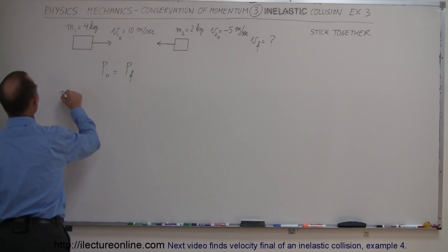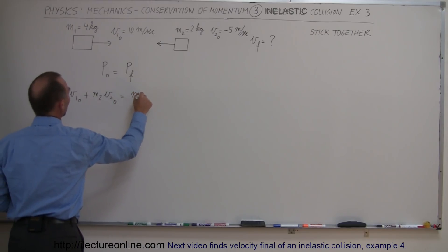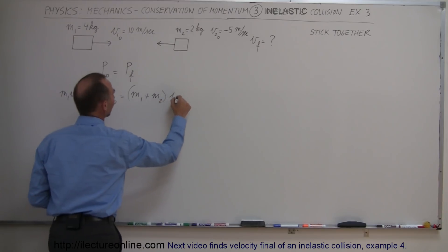And so we can write that M1 V1 initial plus M2 V2 initial equals M1 plus M2, because they're joined together, times V final, which is what we're looking for.